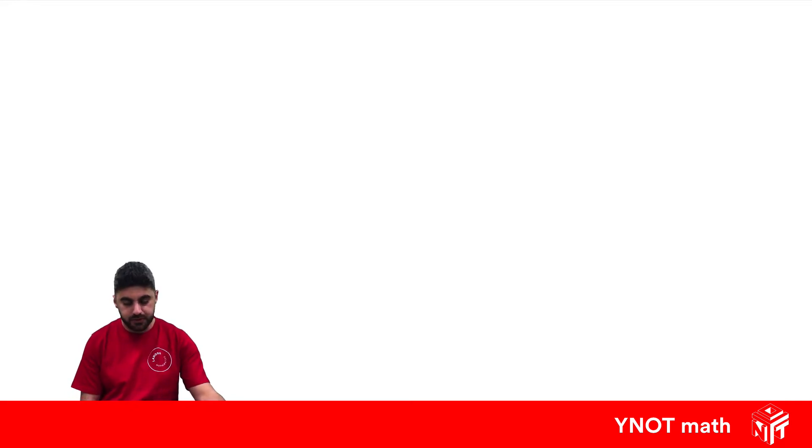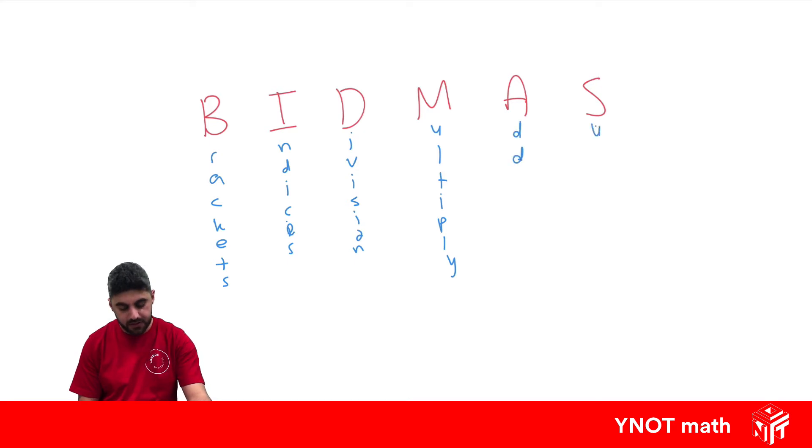The good way to remember the order is BIDMAS. Now what does all this stand for? Well the B stands for brackets, the I stands for indices, the D stands for division, the M for multiplication, the A for addition, and the S for subtraction.